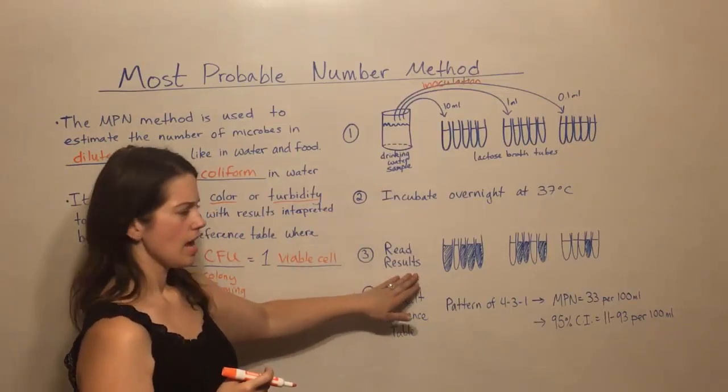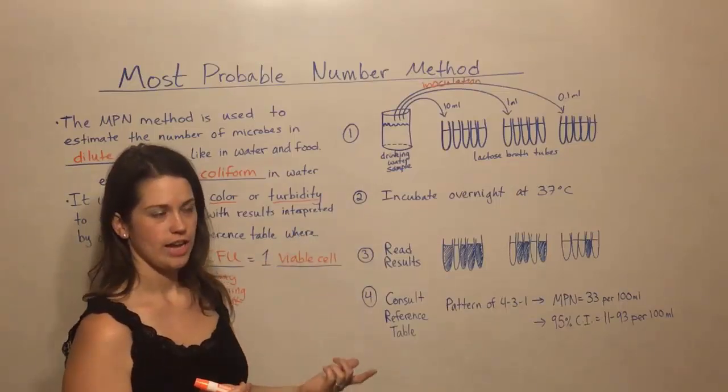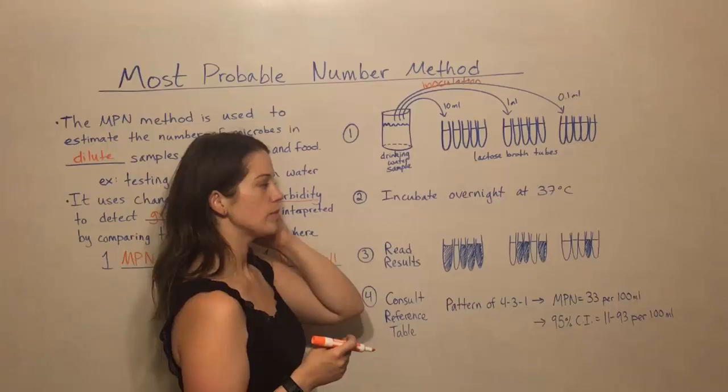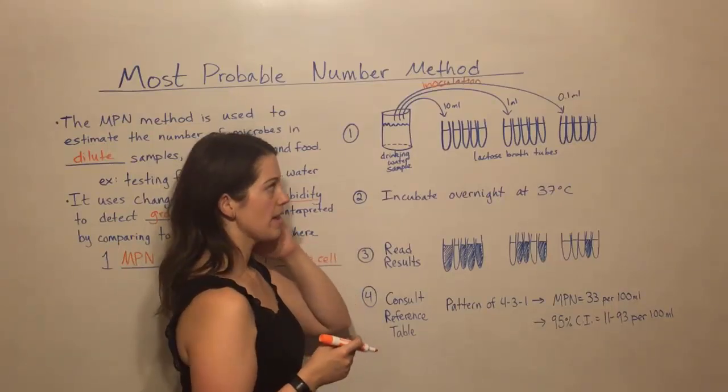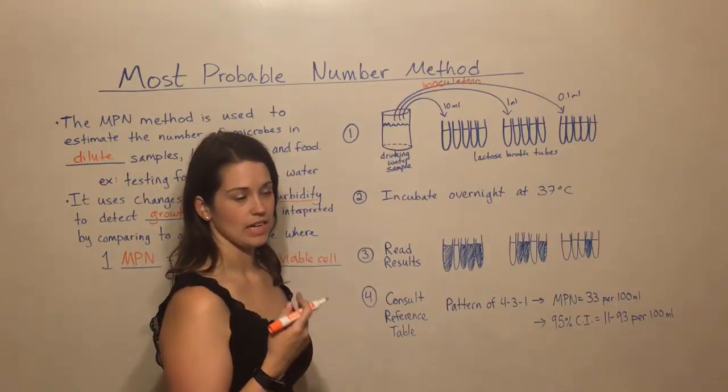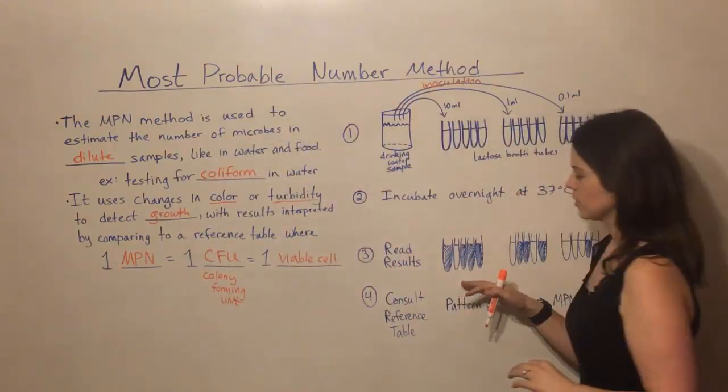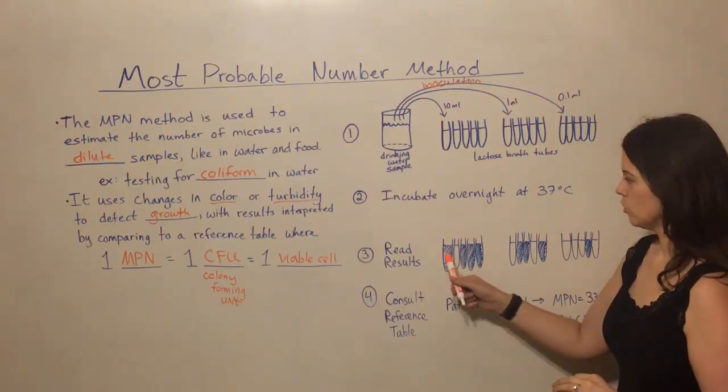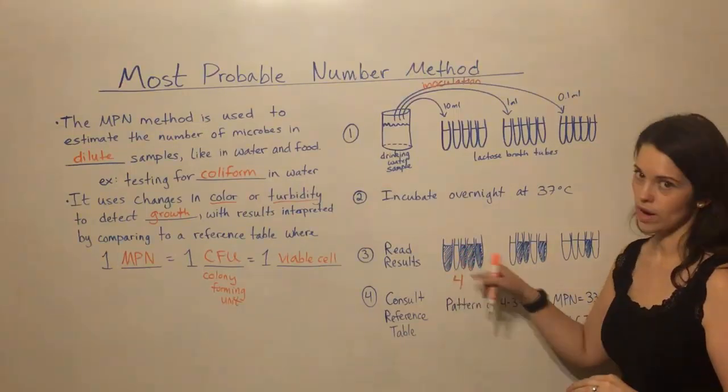Then it's time to read results. And what that means is you're looking for the color change. So when coliform bacteria are present in these broth tubes, they will ferment the lactose and that results in a color change. For this particular test, we have four positive tubes here. So four of them showed a color change. One did not.